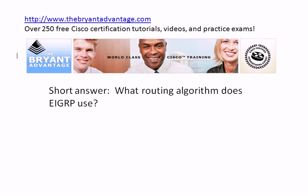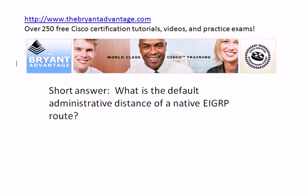EIGRP uses DUAL as its routing algorithm. The default administrative distance of a native EIGRP route is 90 — as opposed to one learned by redistribution, which we'll go over in a moment.